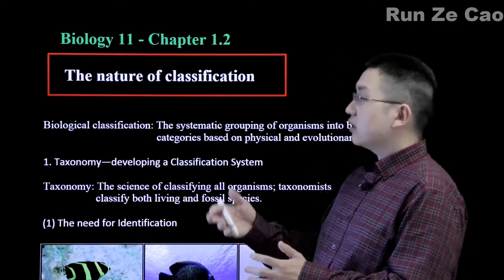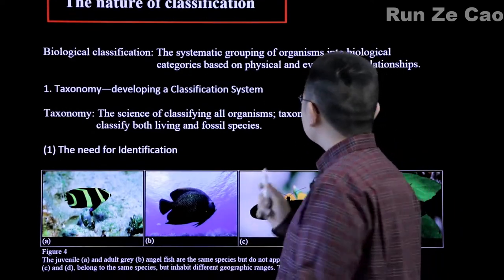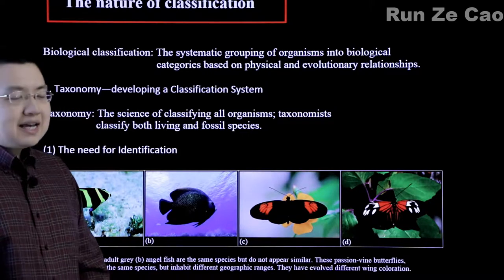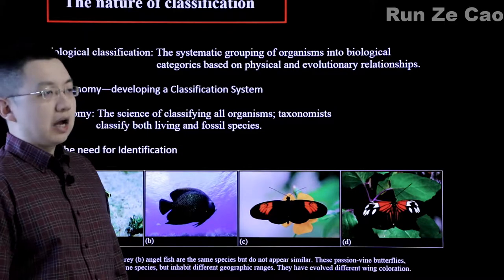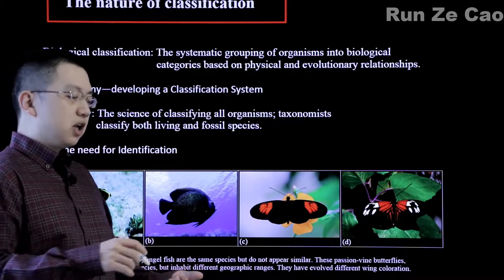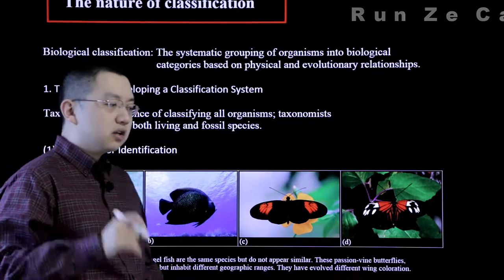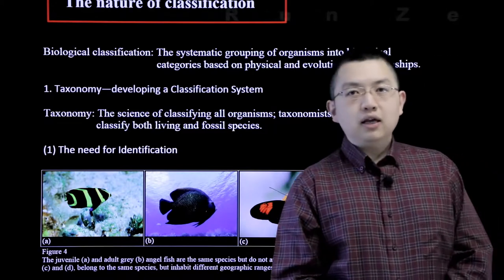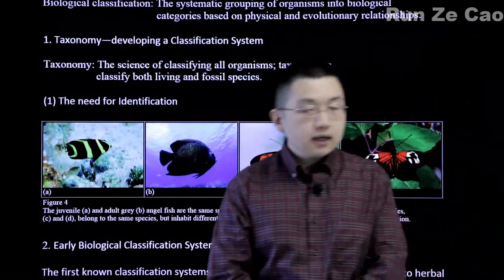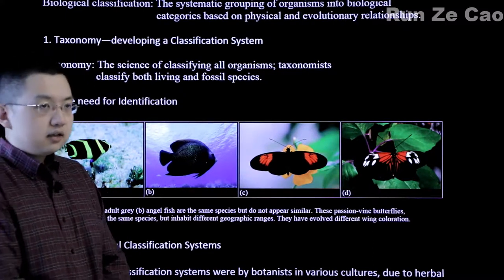People have this need to give things labels to make our lives more convenient, organized, and generally easier. Biological classification is the systematic grouping of organisms into biological categories based on physical and evolutionary relationships. When corresponding with someone a long distance away, references to local organisms may not get the point through unless you attach some sort of name to it. Taxonomy is the science of classifying all organisms.